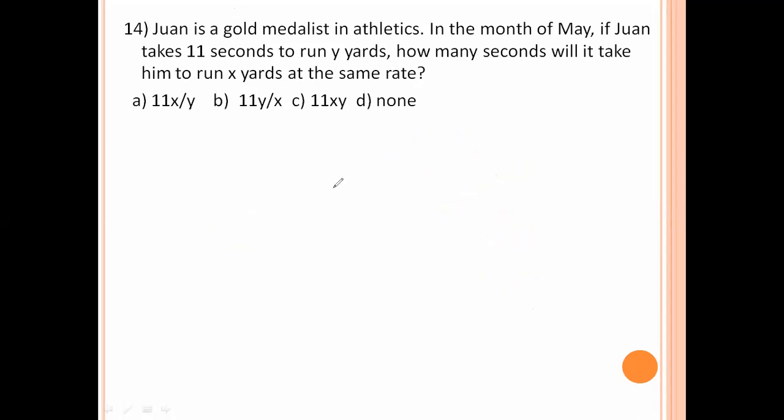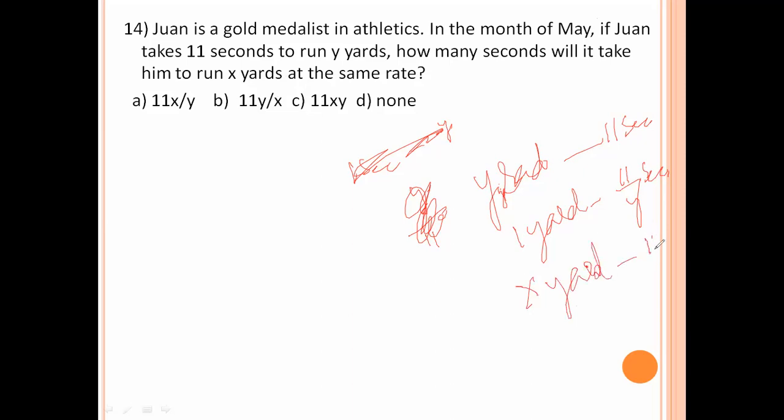John is gold medalist in athletics. In the month of May, John takes 11 seconds to run Y yards. 11 seconds to run Y yards, 1 second he runs Y by 11. Or 1 yard, Y by 11 seconds. How many seconds will take him to run X yards at the same rate? Y yards run in 11 seconds. 1 yard run in 11 by Y seconds. Here also, you take the same rate. It runs to X yards. X yards runs how much time? 11X by Y seconds. So, option number A is the right answer.